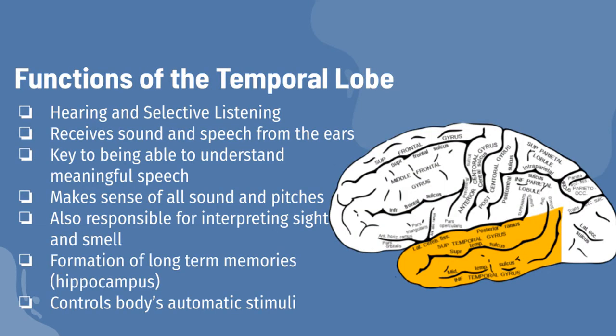I will be talking about the functions of the temporal lobe. The temporal lobe mainly revolves around hearing and selective listening. Selective listening is a mental filter that makes us hear what we want to hear and block out the rest. It receives sensory information, such as sounds and speech from the ears. The temporal lobe is the key to being able to understand meaningful speech — we would not be able to understand someone talking to us if it wasn't for the temporal lobe. This lobe makes sense of all the different sounds and pitches being transmitted from the sensory receptors of the ears.